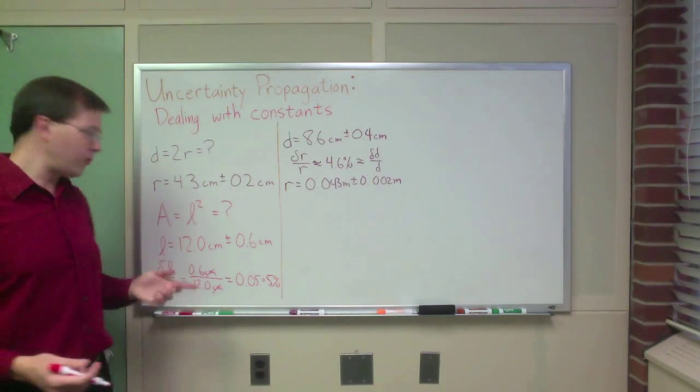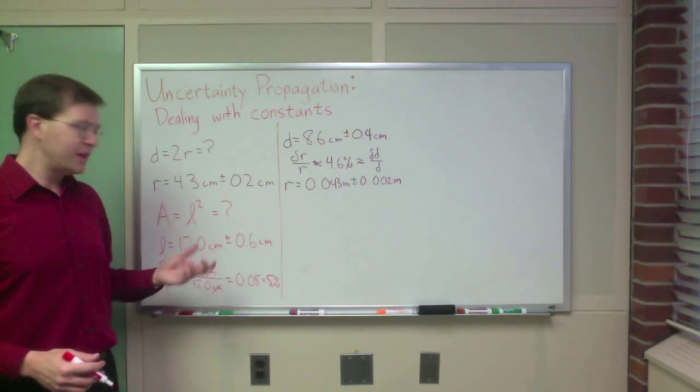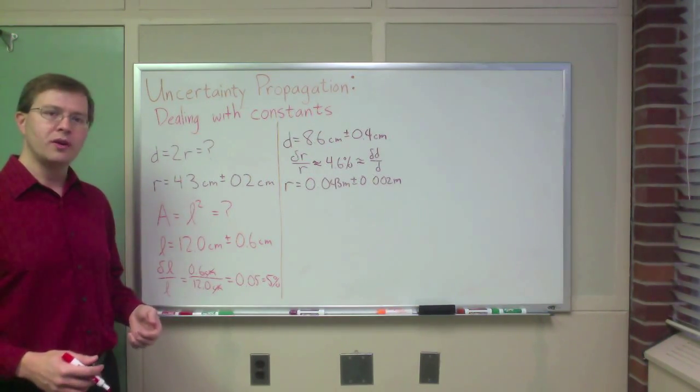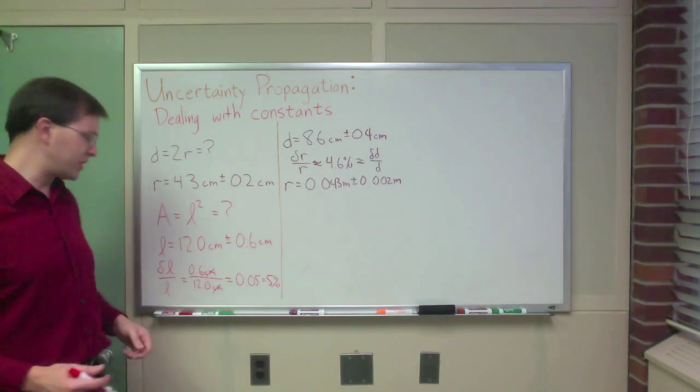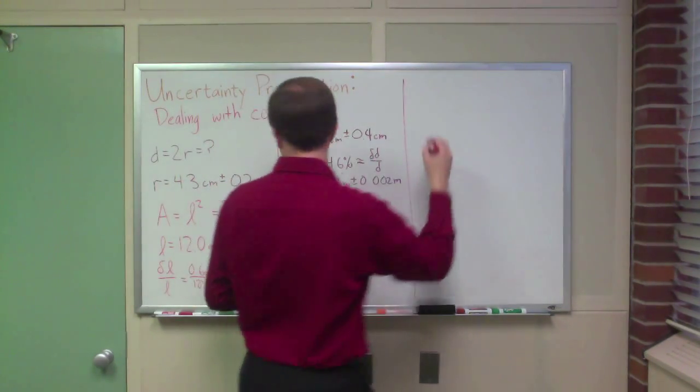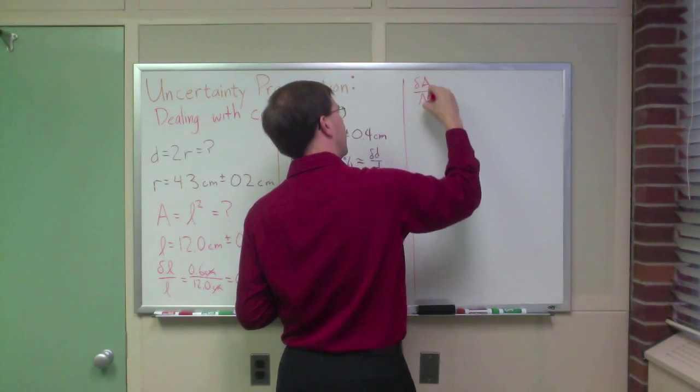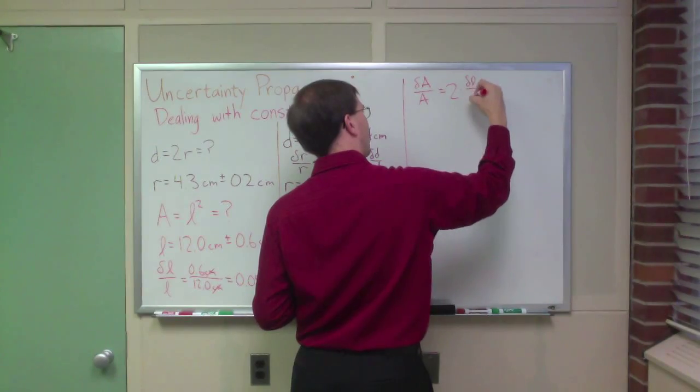So the easy rule for raising something to a power, raising an uncertain quantity to a power, is if I'm squaring it, if I'm raising it to the second power, I just multiply it by 2. Whatever the exponent is, is the scale factor for the uncertainty.